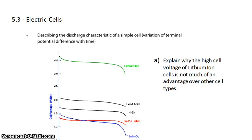David Kahn here with a question from section 5.3. We're going to describe the discharge characteristics of a simple cell, the variation of the terminal potential with time.